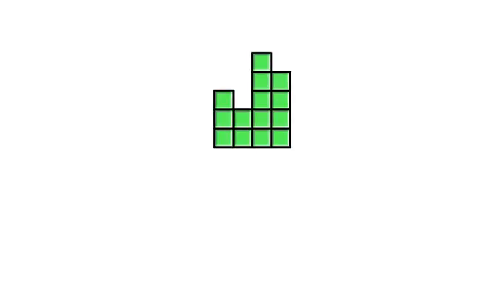This picture is not an array since all of the columns are of different sizes. The addition sentence we can write from this picture is 3, plus 2, plus 5, plus 4. Since this picture doesn't represent repeated addition, it does not represent multiplication.